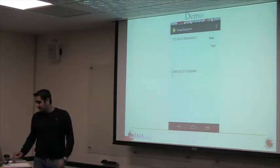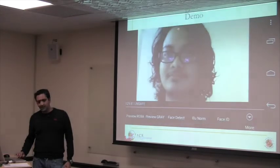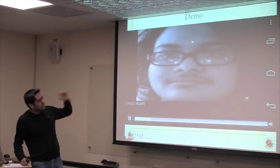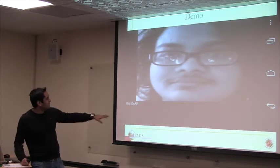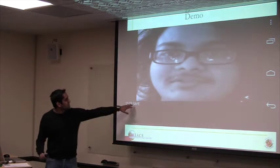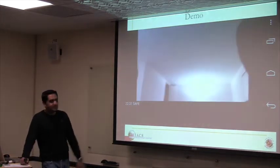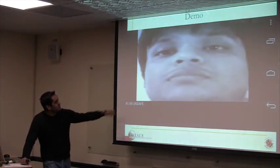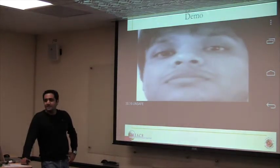This shows that we can define a threshold — say around one — to reject imposters. We have a similar demo for faces. Sianthan is already enrolled and the display shows 'safe mode.' When he gives the phone to his roommate, as soon as we can capture the roommate's face, it switches to 'unsafe.'